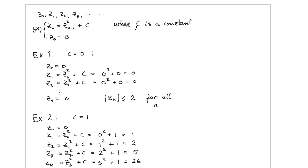We have some constant C, and the nth element of this sequence is defined by the square of the previous element plus this constant C.